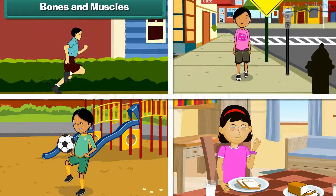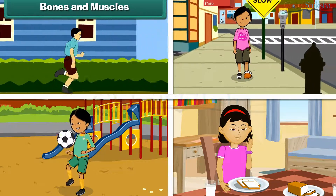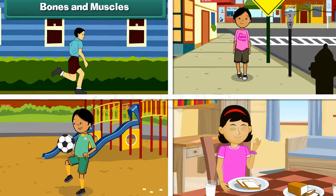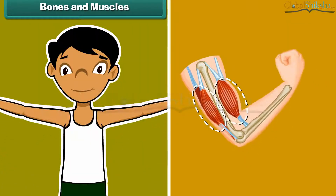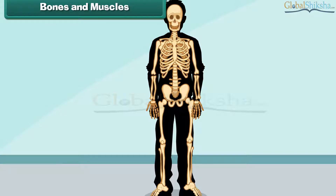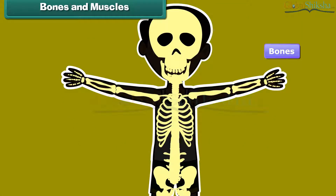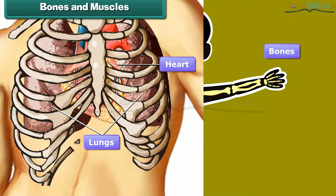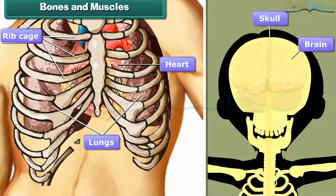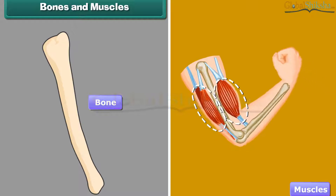Bones and muscles: Bones are made up of minerals like calcium and phosphate. Bones provide a framework for the human body and provide support and protection to the internal organs. For example, the heart and lungs are protected by the ribcage and the skull shields the brain. Bones alone cannot make us move; muscles attach bones to one another and facilitate movement.